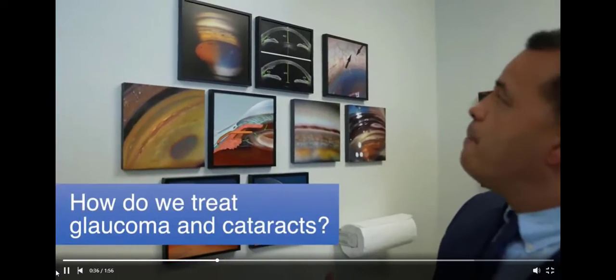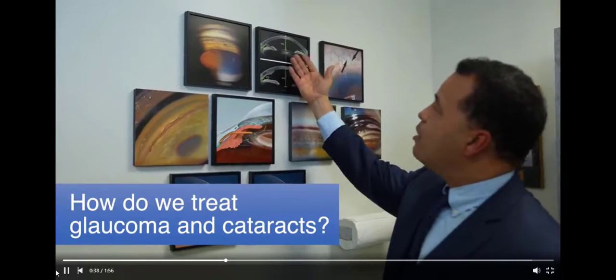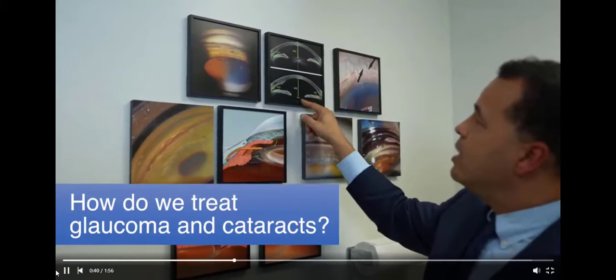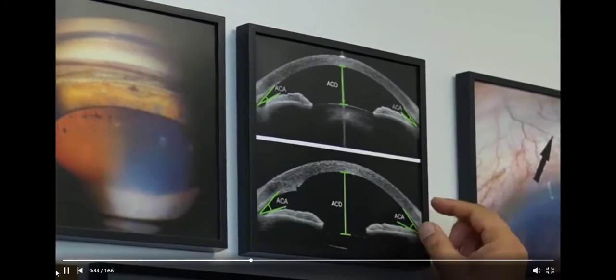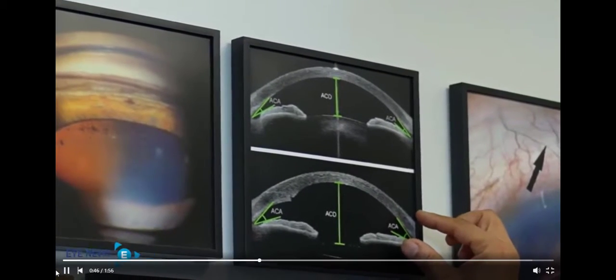So how do we treat that? My approach to glaucoma is by taking the cataract out and replacing it with a lens. And look what happens. When you take this cataract out and I put an intraocular lens in the eye, the drainage angle opens much more.